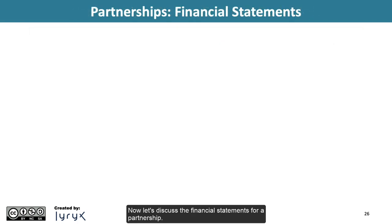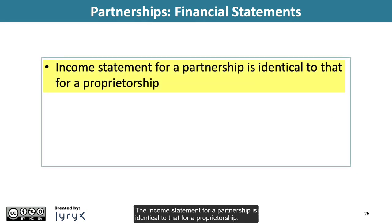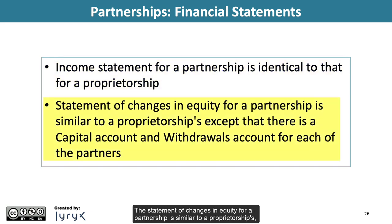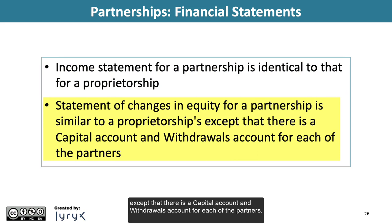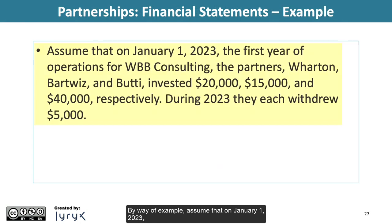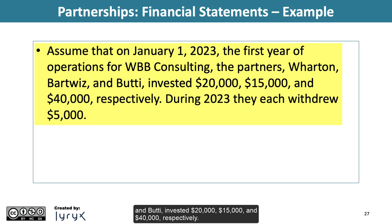Now let's discuss the financial statements for a partnership. The income statement for a partnership is identical to that for a proprietorship. The statement of changes in equity for a partnership is similar to a proprietorship's, except that there is a capital account and withdrawals account for each of the partners. For example, on January 1, 2023, the first year of operations for WBB Consulting, the partners Wharton, Barwiz, and Beauty invested $20,000, $15,000, and $40,000, respectively.